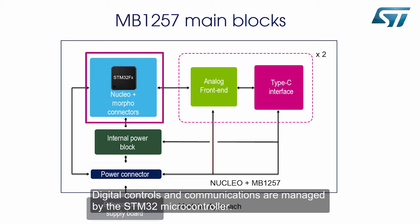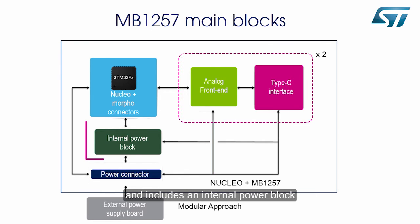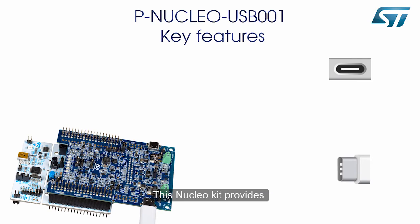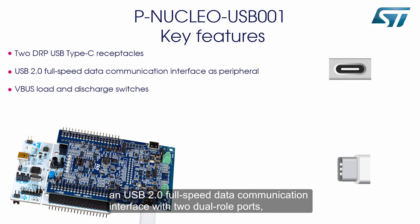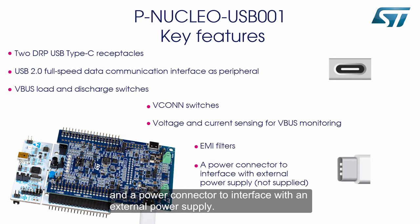Digital controls and communications are managed by the STM32 microcontroller. The analog front end is built using discrete devices and includes an internal power block, but can also use an external power supply. This nucleo kit provides a USB 2.0 full speed data communication interface with two dual-role ports, switches, voltage and current sensors, EMI filters, and a power connector to interface with an external power supply.